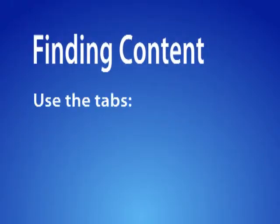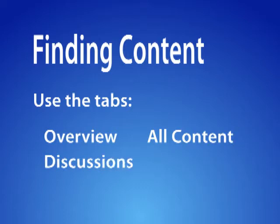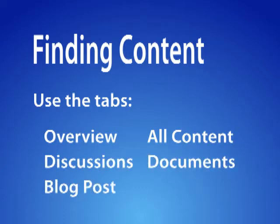Finding content is pretty simple. You can just navigate around using the tabs, and the tabs will show you different kinds of specific content relevant to the work you're doing or whatever it is you're interested in. So you can see all the content or just specific things that you want to look at.